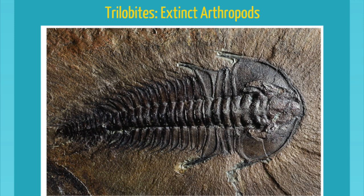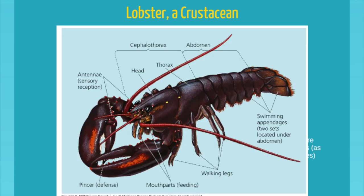If you combine the first two sections, you get a cephalothorax. Head, thorax, and abdomen evolved from these multiple repeating units. Arthropods have fantastic nervous systems, complex bodies, very good senses — all coordinated in appendages. Looking at this picture of a lobster, you can try to count the number of appendages. An appendage is any structure that projects off the body of the animal, and it is used primarily for three things: sensing, walking, and feeding.